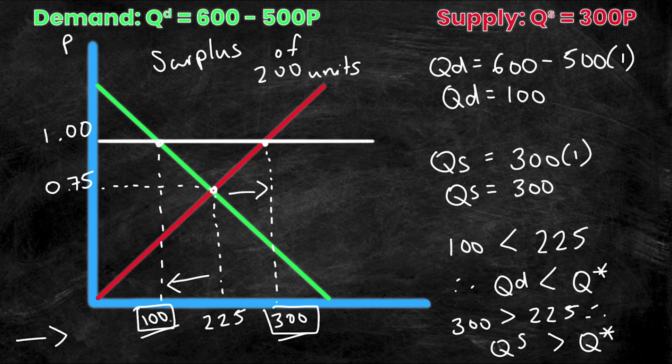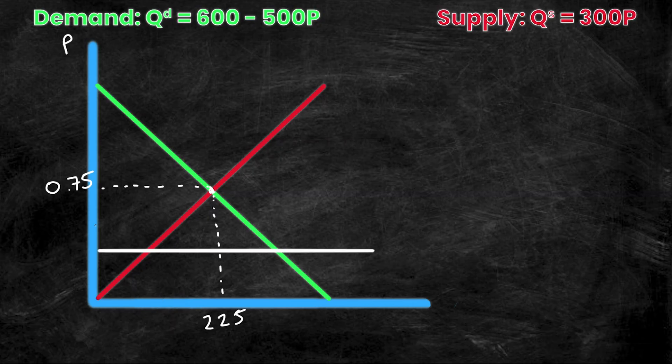And that's simply the difference between how much is supplied and how much is actually demanded. So 100 units will be traded in the market, even though there's 300 units available, there's only demand for 100 units. Now let's take a look at what happens when there's a shortage. Now let's say that the price is actually something lower. Let's say 50 cents or 0.5.